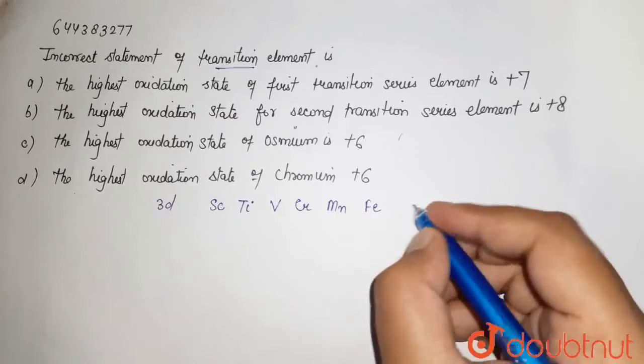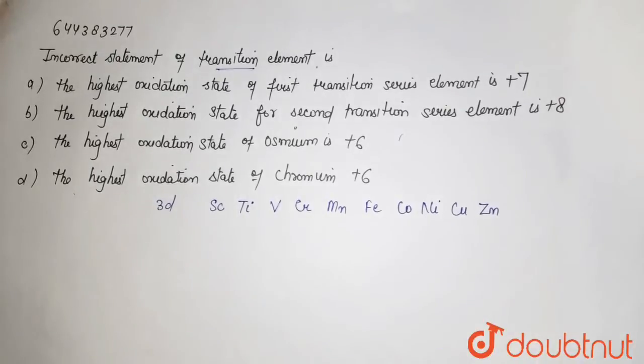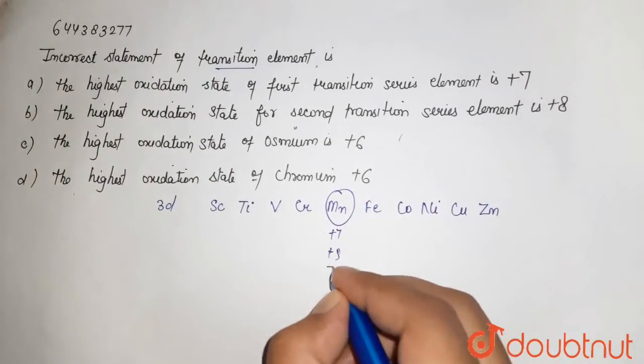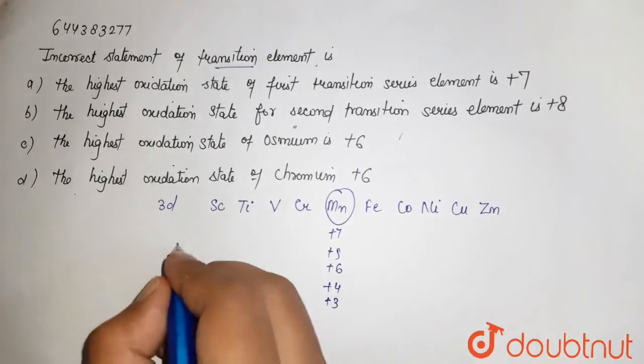manganese, iron, cobalt, copper, zinc. So this is the 3d series. The maximum oxidation state is shown by manganese, that is +7. It also shows +5, +6, +4, +3.